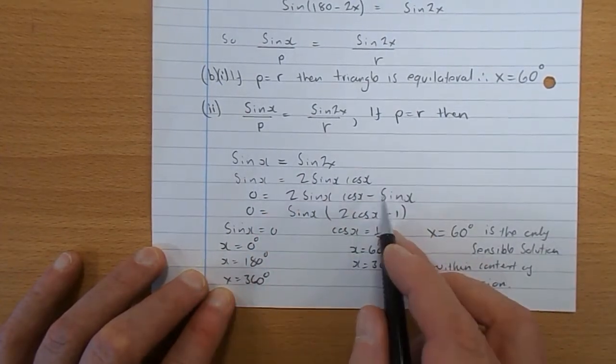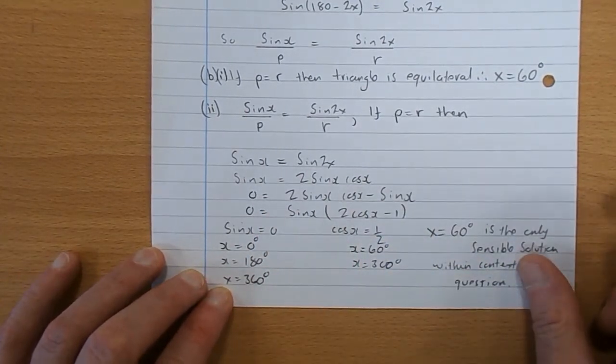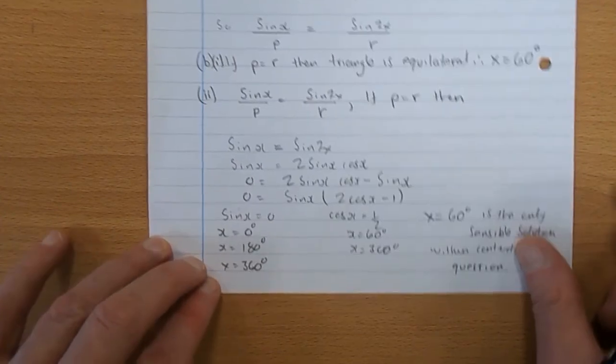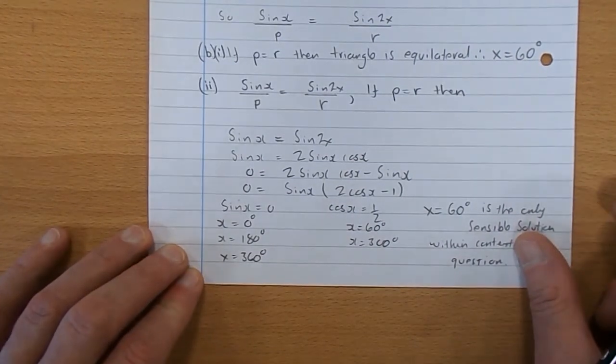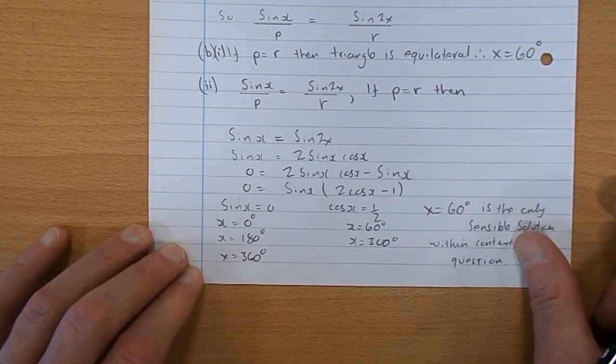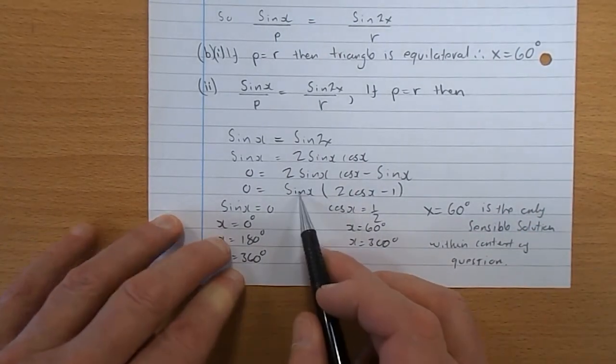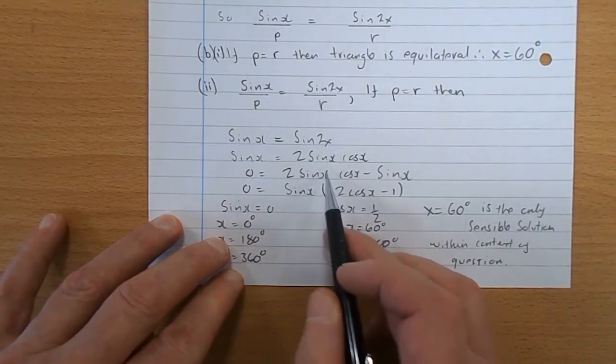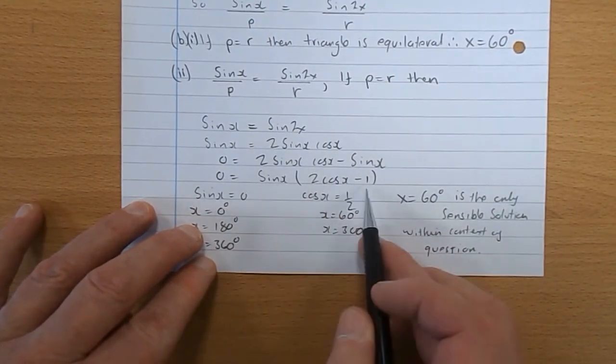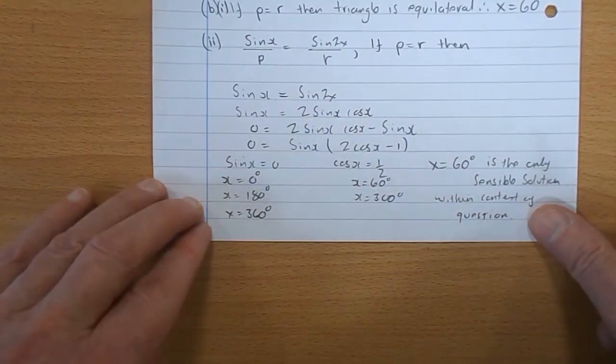Take the sine X over. 2 sine X cos X take sine X. And our usual tactic here is to factorize. So I'm going to take sine X out as a common factor, times 2 cos X take 1. Sine X times 2 cos X, 2 sine X cos X take sine X times 1, gives sine X. Yep, I'm happy with that.